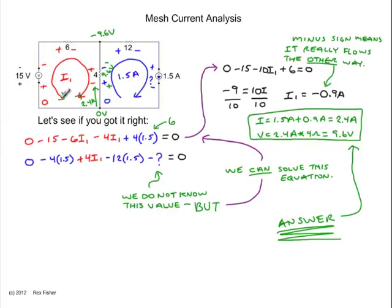Did you get it right? I originally drew I1 going clockwise and I2 going clockwise. And then I went to do the first equation, starting here at the zero corner. 0, minus 15 volts, minus 6 times I1, minus 4 times I1, plus 4 times, right there. But instead of writing I2, I put in 1.5 amps, because we know what I2 really is. And 4 times 1.6, or 1.5 equals 6. Which gives us this equation, one unknown, which we can easily solve.